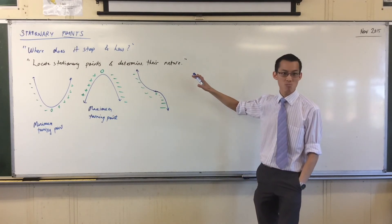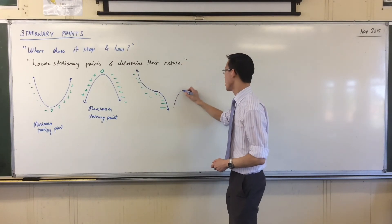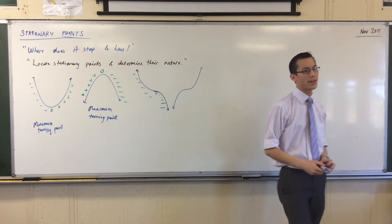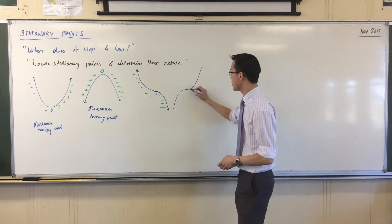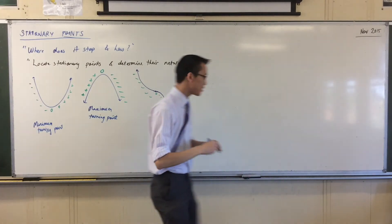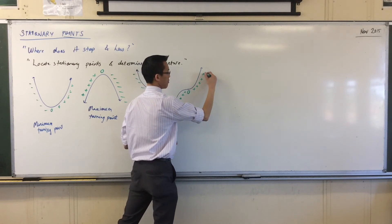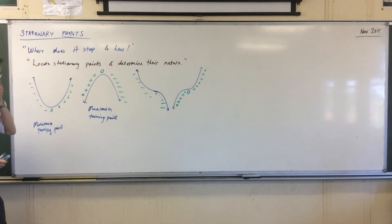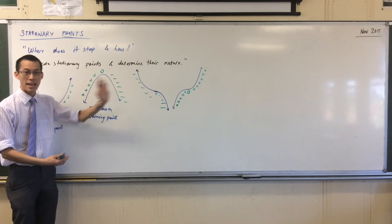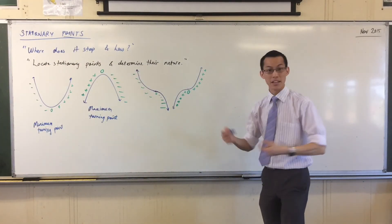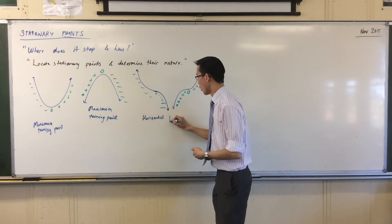This is one case — I could do it in reverse. Instead of going down, stopping, and going down, I can go up, stop, and then go up again. In fact, this looks just like a very famous function: x cubed. Right there, I've still got the stationary point, but on either side I have a positive gradient. These two here are two different versions of the same class of object, called a horizontal point of inflection.